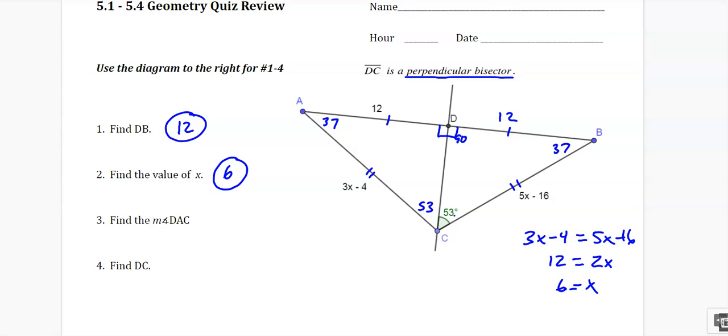Find the measure of DAC. Well, DAC is right here. So that's 37 degrees. And find the length of DC. That ends up being a leg of a right triangle.